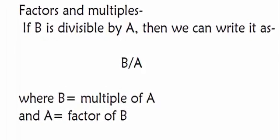Factors and multiples: If b is divisible by a, then we can denote it as b divides a, where b is a multiple of a and a is a factor of b. For example, 20 divides 5, so 20 is a multiple of 5, whereas 5 is a factor of 20.